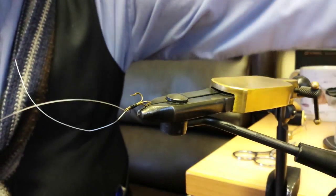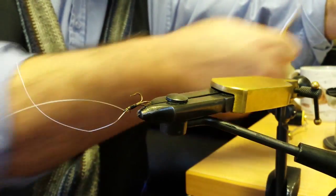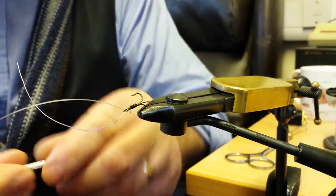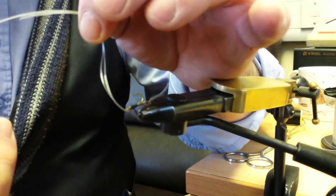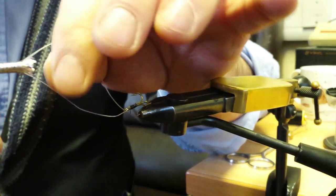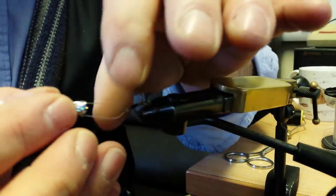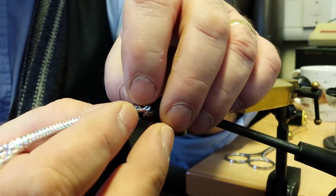Now the next thing we need is Maillard tubing. We fish the two pieces of fishing rod up through the inside of the Maillard tubing like that. Carefully. Just like that.